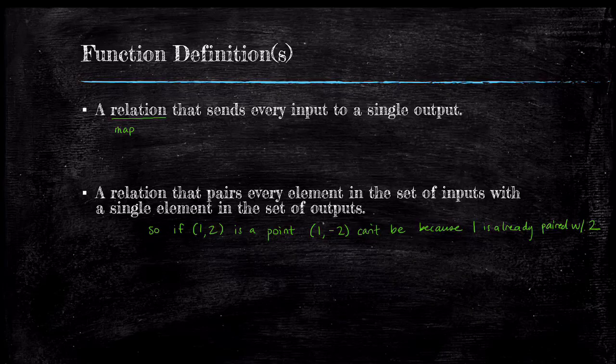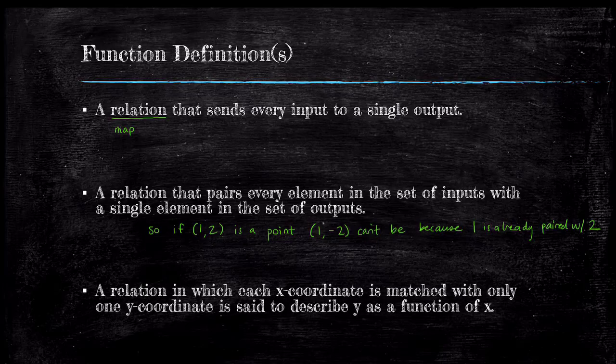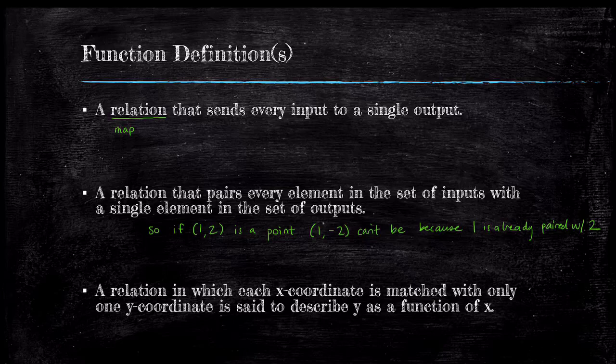The second definition is just a fancier way of saying our first definition. The last definition is from Stitts and Ziegler's pre-calculus text. Verbatim it reads, a relation in which each x-coordinate is matched with only one y-coordinate is said to describe y as a function of x. This definition is very well suited to understanding functions in the context of graphing.